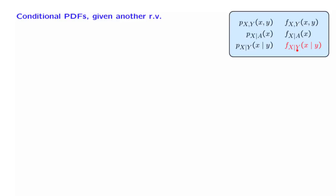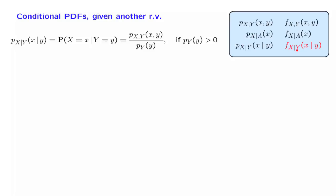We proceed by first looking at the definition for the discrete case. A typical entry of the conditional PMF is just a conditional probability but in different notation. Using the definition of conditional probabilities, this is equal to the ratio of the joint divided by the probability of the conditioning event.